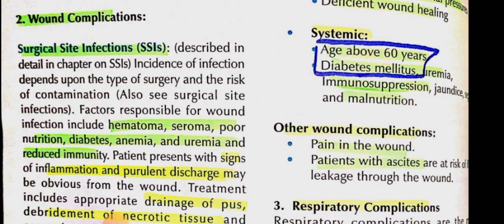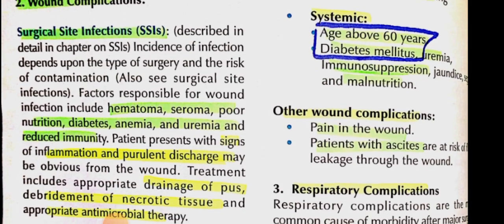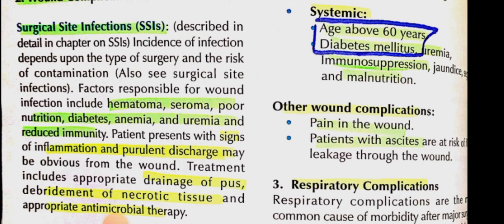Wound complications: surgical site infections have been discussed in detail. Factors causing wound infection include hematoma, seroma, poor nutrition, diabetes, anemia, uremia, and reduced immunity. Patients present with signs of inflammation and pus discharge. Treatment involves drainage of pus, debridement of necrotic tissue, and antimicrobial therapy.